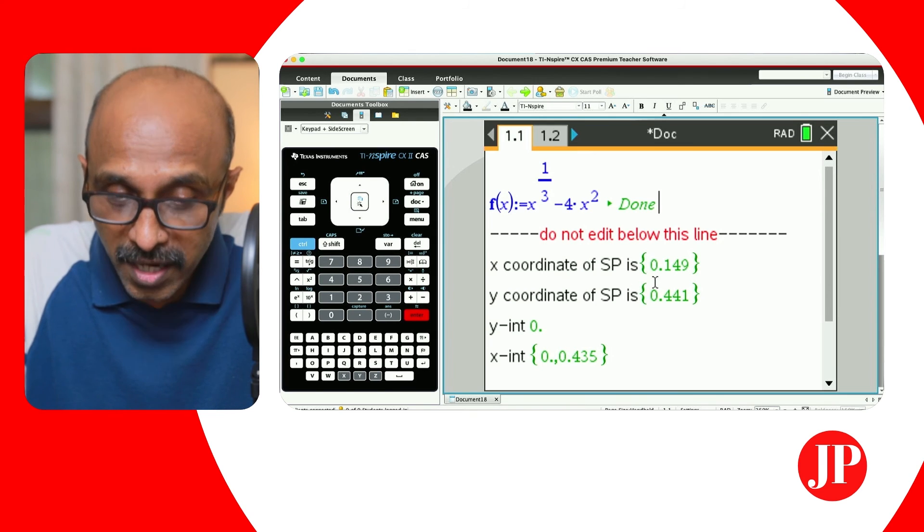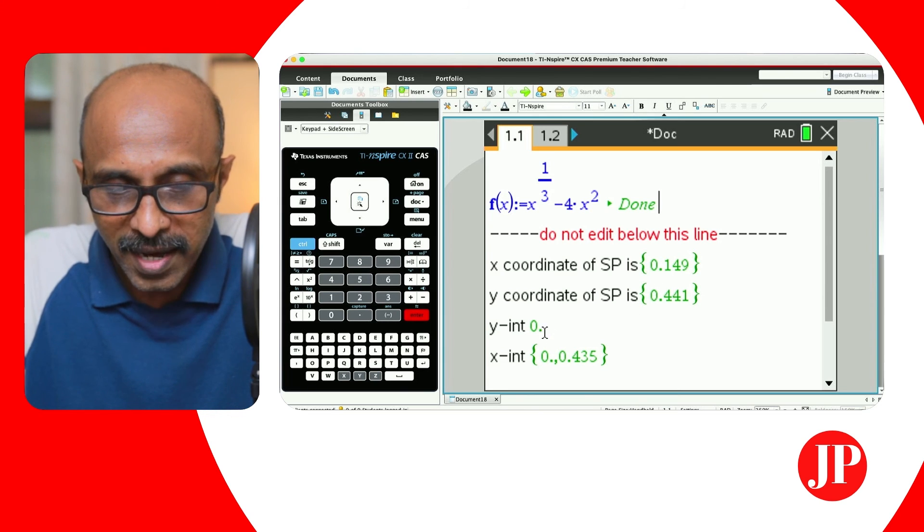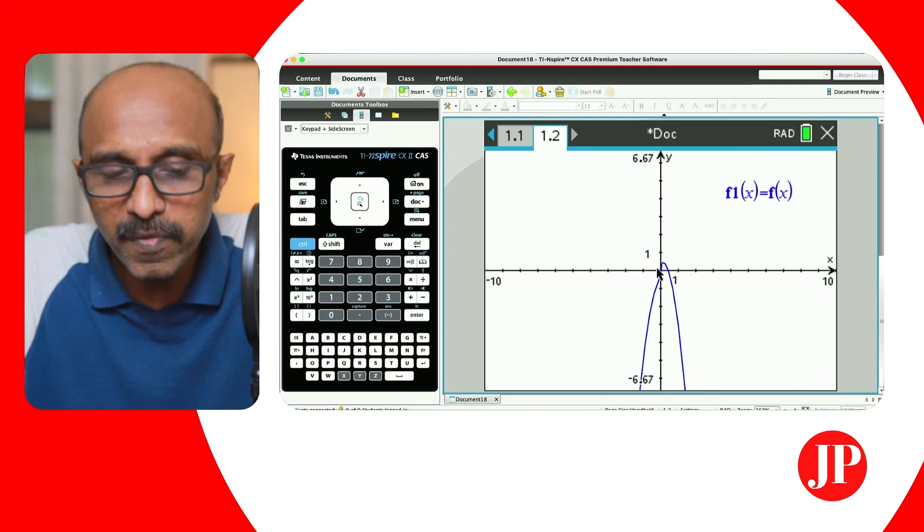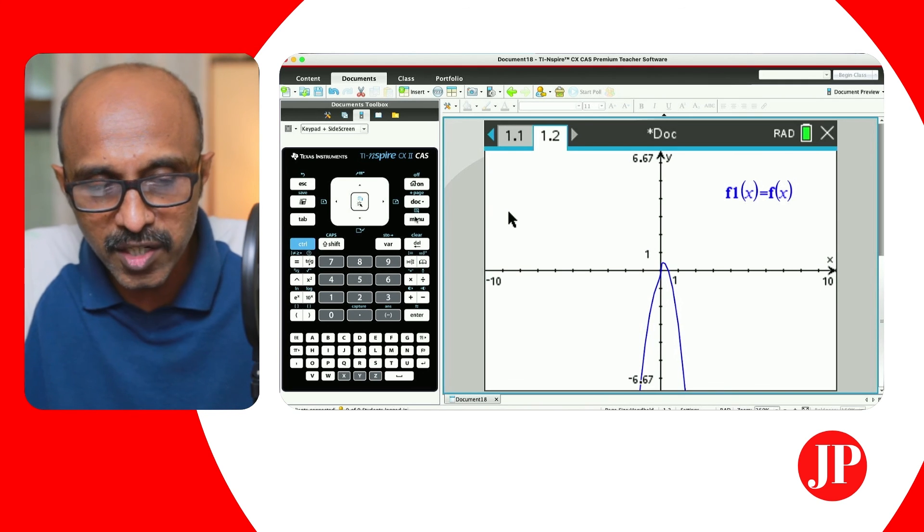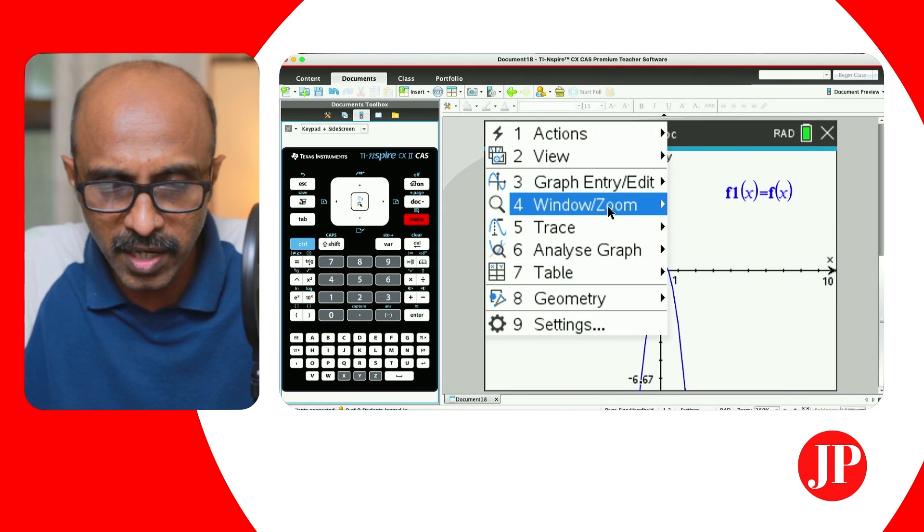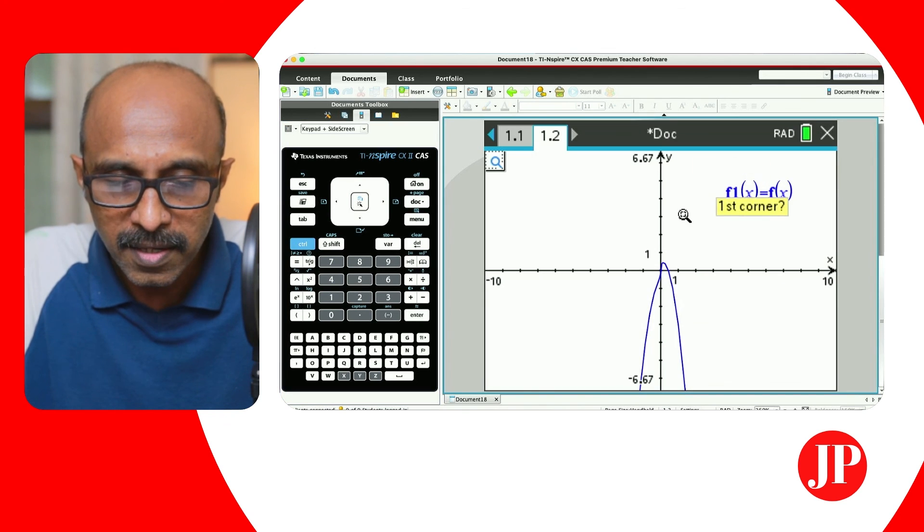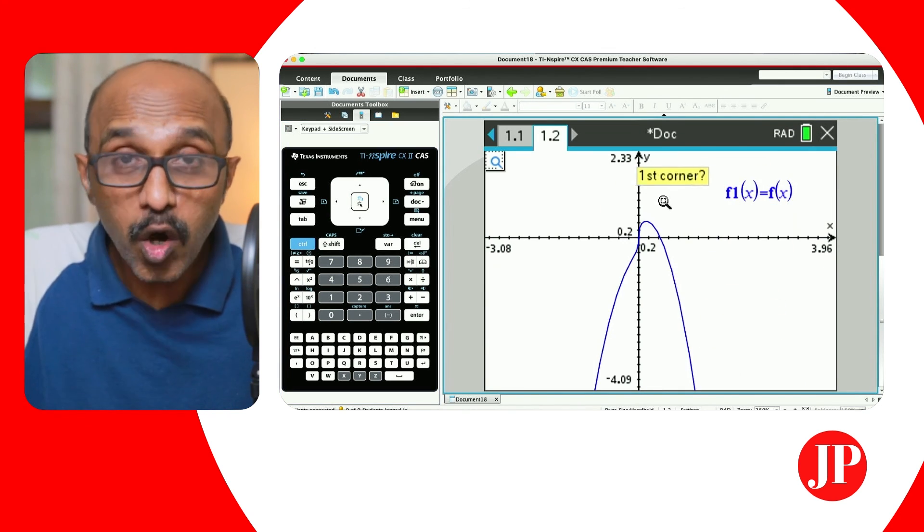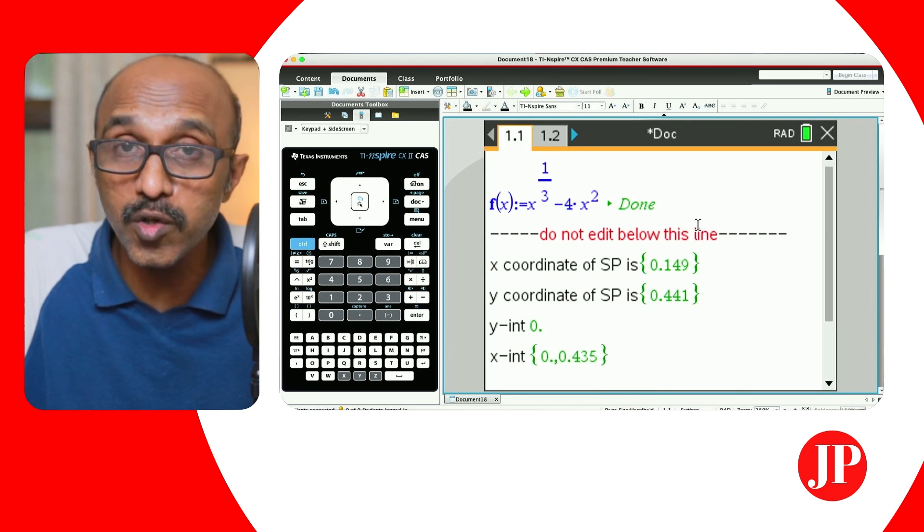There you go, everything is updated here. The x coordinate of the stationary point is 0.149 and 0.441, and that's the y intercept, and there you go the coordinates of the x intercept 0 and 0.435. Let's take a look at the graph this time. Can you see the graph? Obviously you can go and zoom in and check out what the graph is going to look like. You can make a zoom box, take a look at it there, and you can verify the graph. Then you can copy down the graph and make a note of whatever features this widget has to offer you.